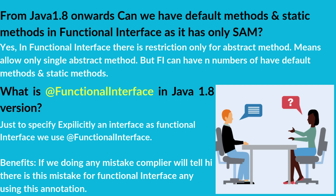What is the functional interface annotation in Java 1.8? We use the @FunctionalInterface annotation to explicitly specify an interface as a functional interface. The benefit is that if we make any mistake, the compiler will flag it as an error for that functional interface.